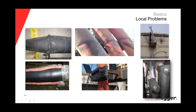Another classic workmanship issue shown is where the guys fixing cables in the holders exceeded the torque and inflicted deformation in the cable, which sooner or later will create partial discharges. The last two pictures show classic termination problems — one where the cuts were not made correctly, and another where contaminants were introduced during assembly. All these are local issues affecting specific portions of the insulation, related to workmanship issues or manufacturing defects.